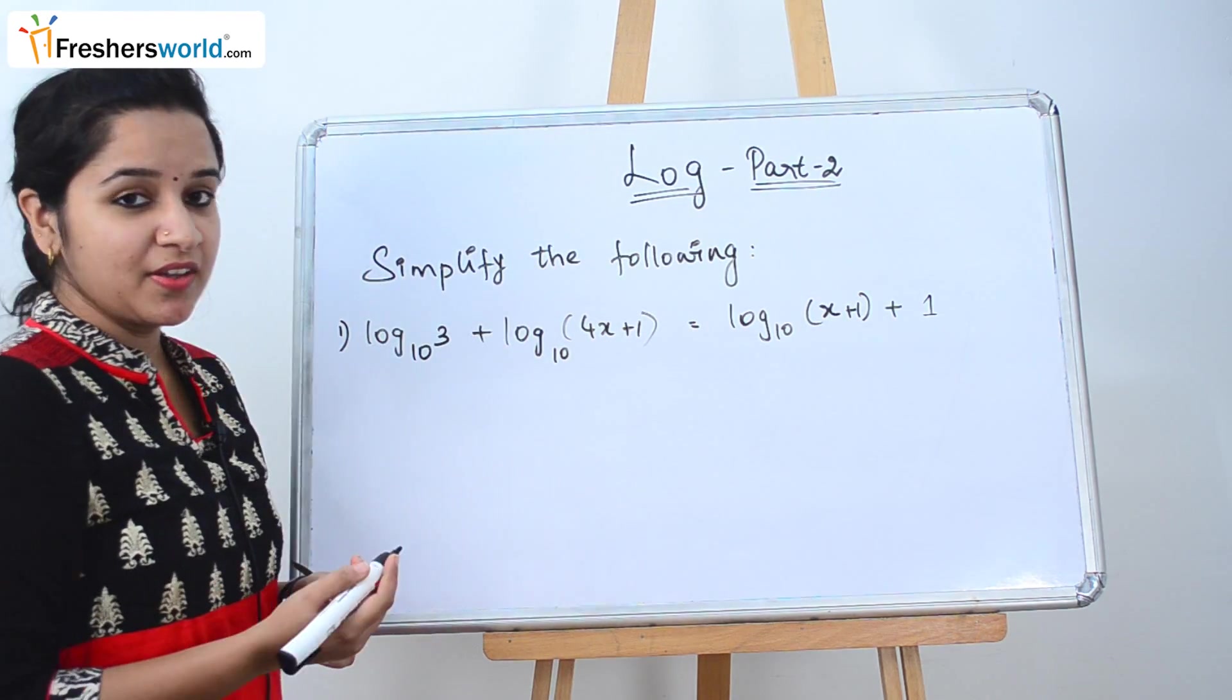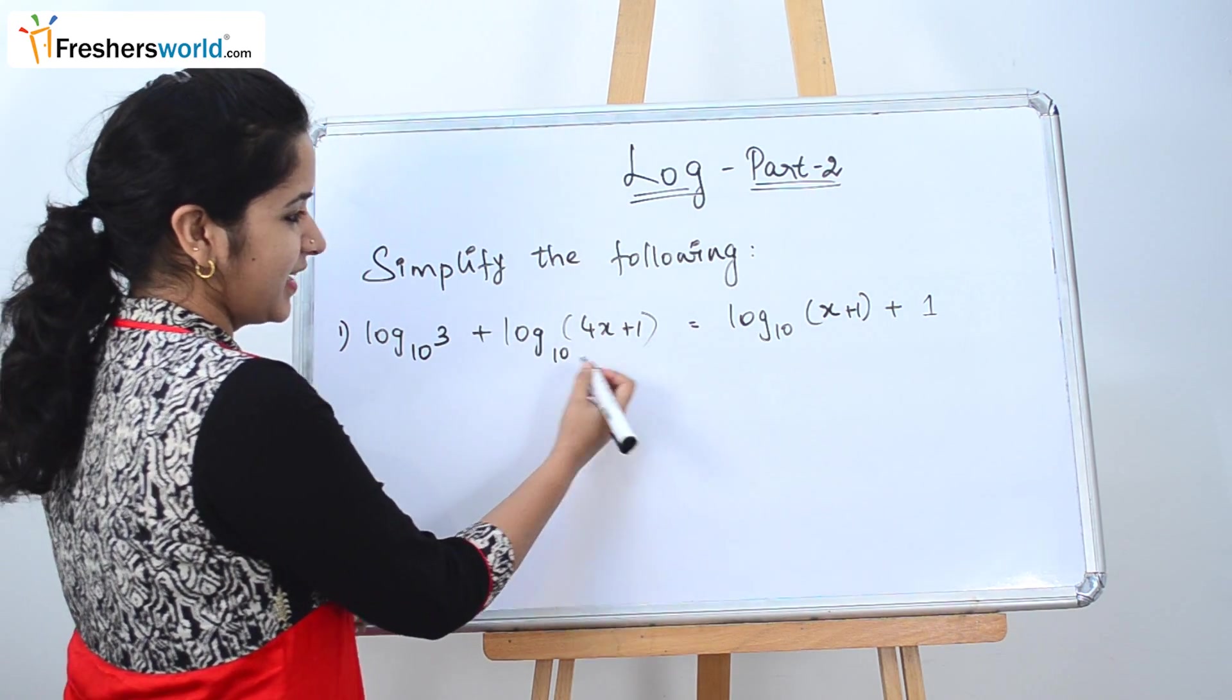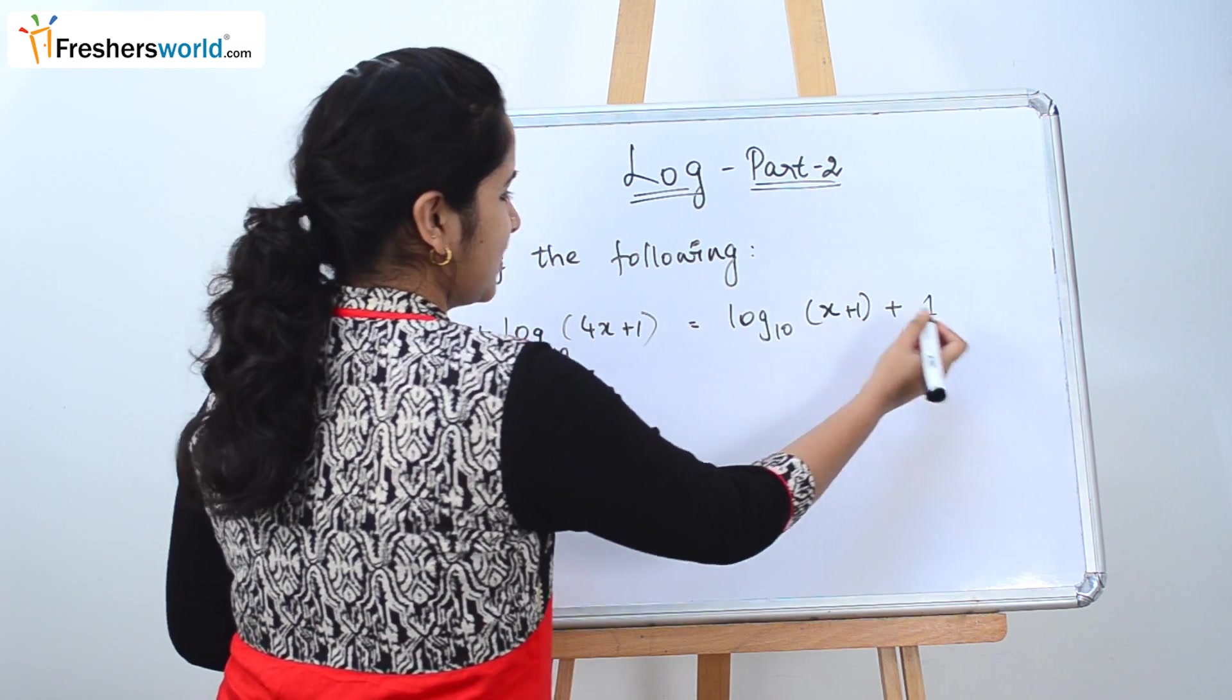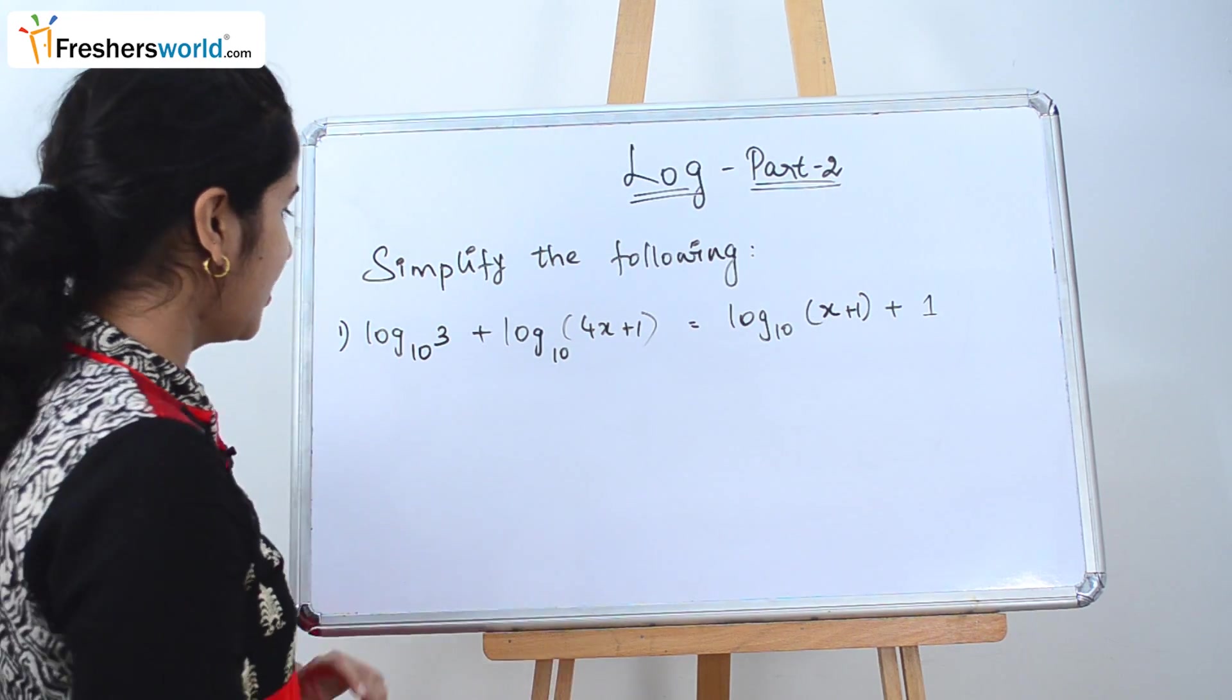So the question that they have given is log₁₀(3) + log₁₀(4x+1) = log₁₀(x+1) + 1. So here we have to find the value of x. So let's see how we can do it.